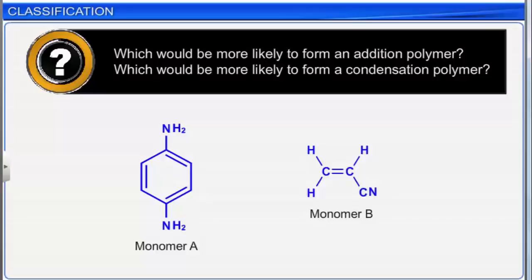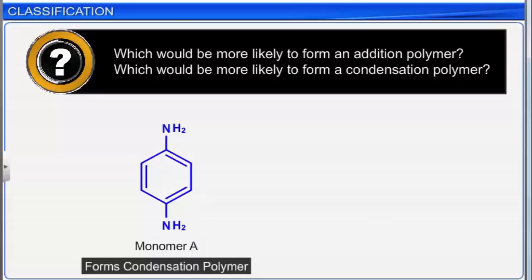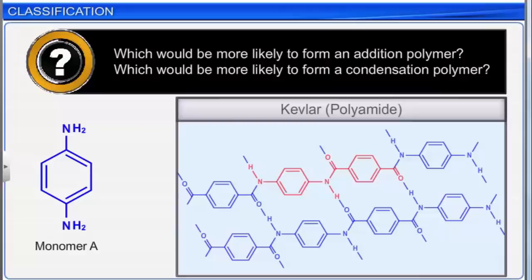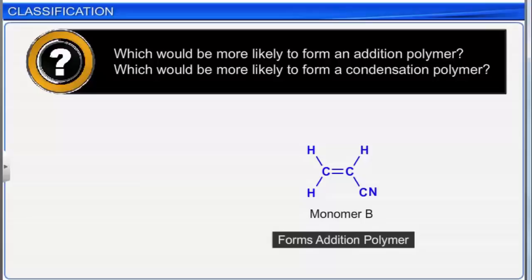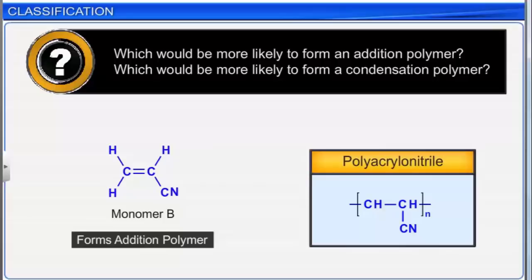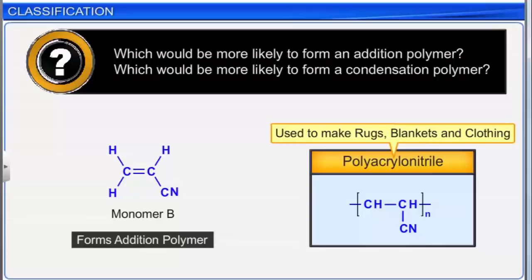Important examples of condensation polymers are PET, also known as Dacron, Nylon 6-6, and Nylon 6. Consider two monomer structures: Monomer A would form a condensation polymer — it is a bifunctional monomer and is one of the two components of Kevlar, a polyamide. Monomer B has a carbon-carbon double bond and forms an addition polymer; it is a monomer of polyacrylonitrile, which is used to make rugs, blankets, and clothing.